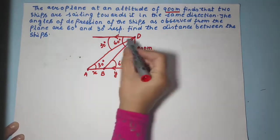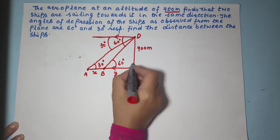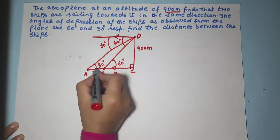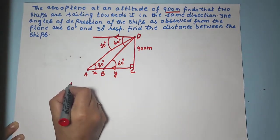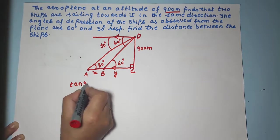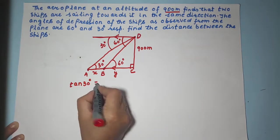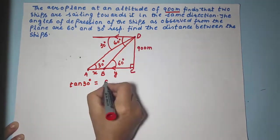Now let's take triangle DAC. It's a right angle triangle and if we take tan 30 degree what will be the value of tan 30 degree here? Opposite upon adjacent. What is opposite? 900.